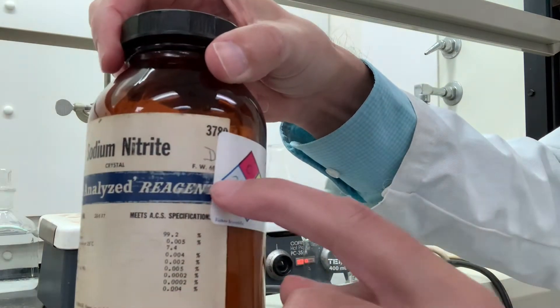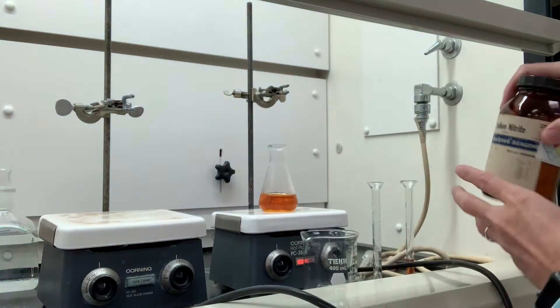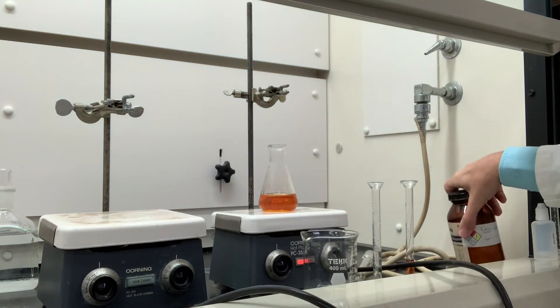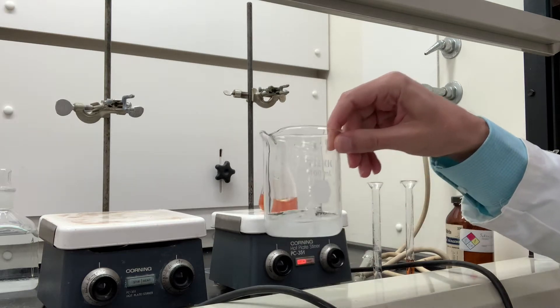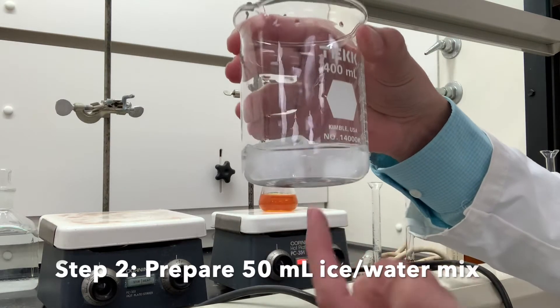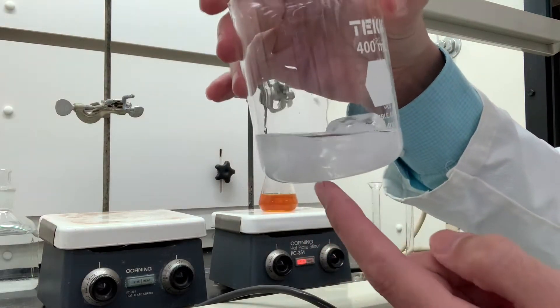Okay, formula weight's kind of hiding off there. Then in a separate 400 milliliter beaker we have 25 milliliters of water and about 4 ice cubes.